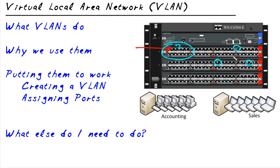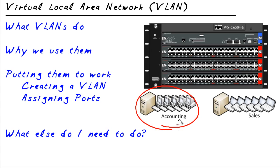Now, how do we actually create these? It's really simple — just a couple of quick one-liners on a Cisco device. There are two basic steps: first, identify a VLAN. So for accounting, we're going to use VLAN 5. We create VLAN 5, and then we assign specific ports on the switch — either in a range or one by one — to that VLAN.